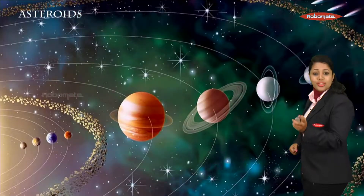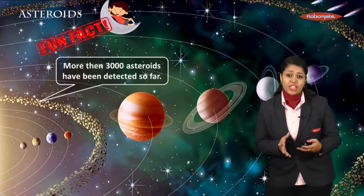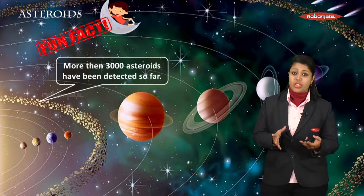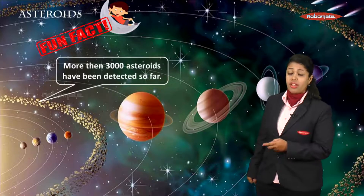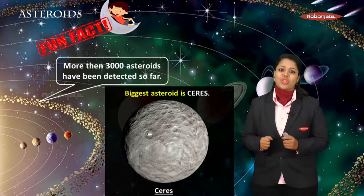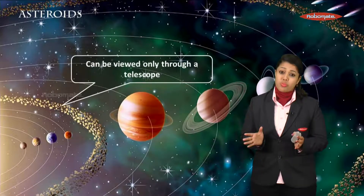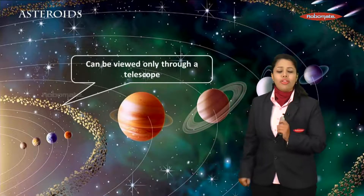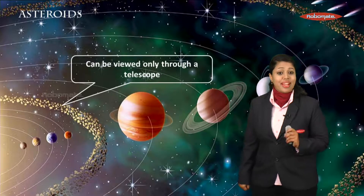There are some facts about asteroids. More than 3,000 asteroids have been detected so far, and one of the biggest asteroids that we know is Ceres. They can only be viewed with the help of a telescope — you cannot see them with the naked eye.